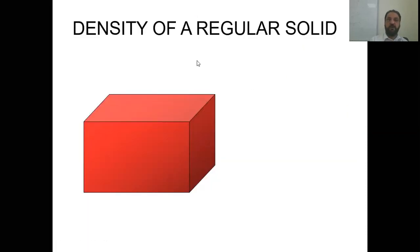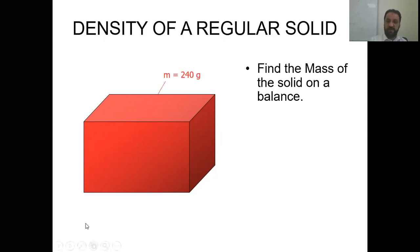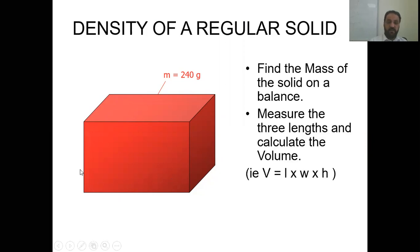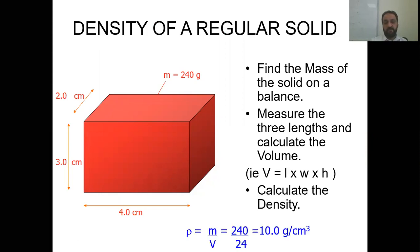If you have a regular shape, you can find its density using the formula: density equals mass per unit volume. For example, if it is a cube, you use the formula: volume equals length times width times height. If length is 4, width is 3, and height is 2, just multiply 4 times 3 times 2 to get the volume, then substitute into the density formula.